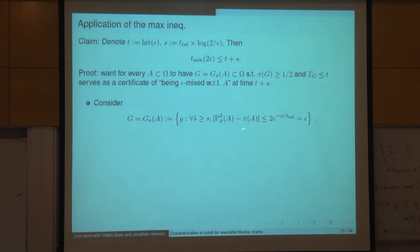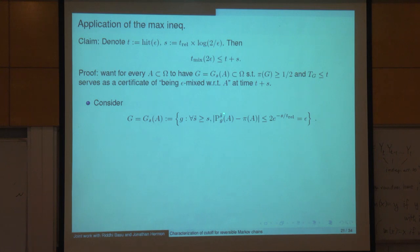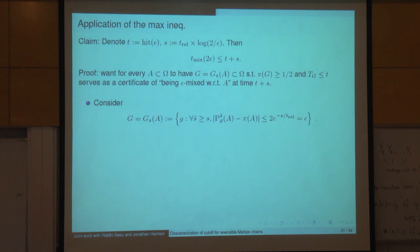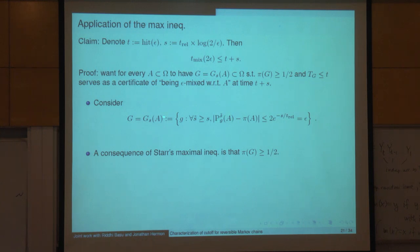G is all points g with the property that if you start at g and run the chain for time s̃, you're close to the stationary distribution: |P^{s̃}_g(A) − π(A)| ≤ e^{−s/t_rel}. If instead of s̃ here I would put s, this is completely standard spectral analysis — just write out the spectral representation of P and do a standard calculation. What's non-standard is that I want this to hold simultaneously for all s̃ ≥ s. That's the novel feature which relates to Star's inequality.